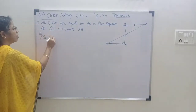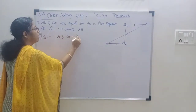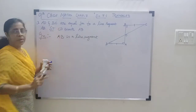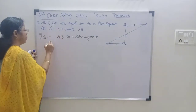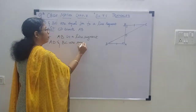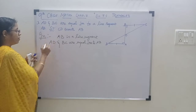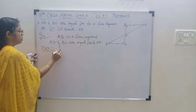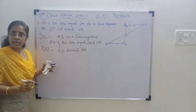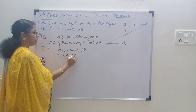What are the things given to us? AB is a line segment. AD and BC are equal perpendiculars to AB — these are all given to us. And moreover, we have to prove that CD bisects AB, that is, we have to prove OA equal to OB.